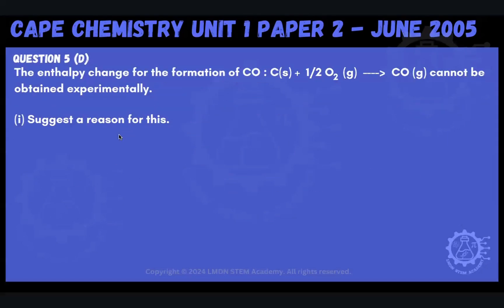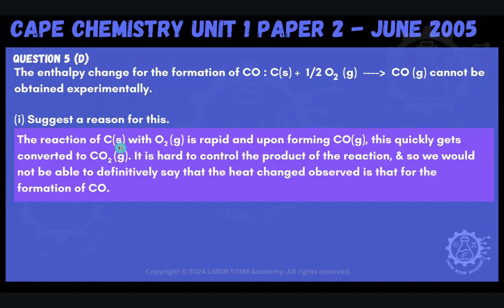The reasoning here is that the reaction of carbon solid with oxygen gas is rapid. And upon forming carbon monoxide, that quickly gets converted to carbon dioxide. It is hard to control the product of the reaction, and so we would not be able to definitively say that the heat change observed is that for the formation of carbon monoxide. We cannot isolate out the carbon monoxide, so we won't know what the enthalpy change of formation for that particular compound is.